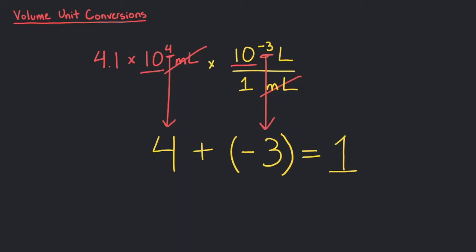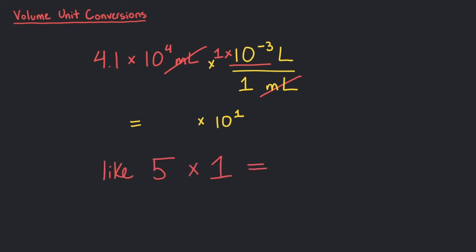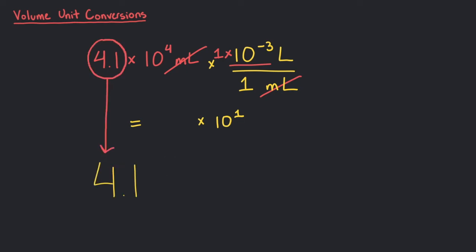The base of 10 stays the same, so part of our answer includes 10 to the first. Now, we multiply the coefficients. For 10 to the negative 3, we can assume it has a coefficient of 1, because any number multiplied by 1 is itself. 4.1 times 1 equals 4.1, so overall we get 4.1 times 10 to the first liters.